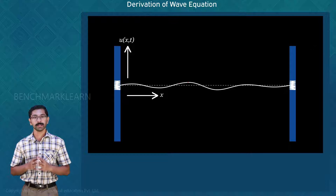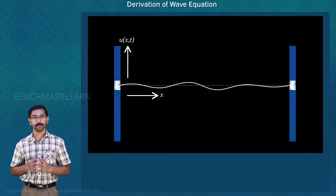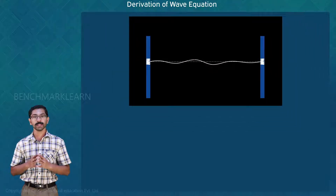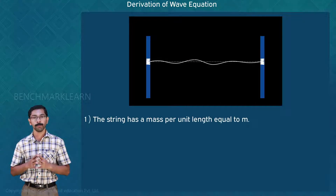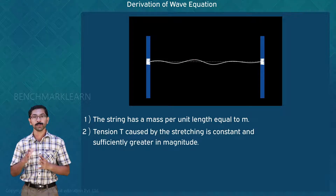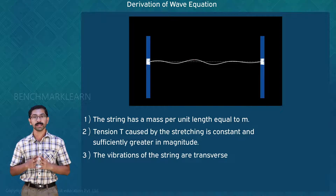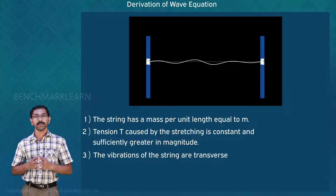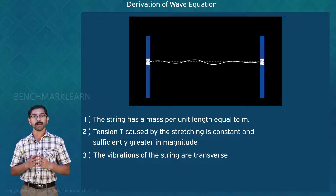The derivation of the wave equation has been asked in some K2 exams, so we discuss each step in detail. We have a vibrating string of length L and a displacement function given by u(x, t). Assume that: first, the string has a mass per unit length equal to m; second, tension T caused by the stretching is constant and sufficiently greater in magnitude; third, the vibrations of the string are transverse. Considering these assumptions, we will check the effect of the force during the vibration and derive the wave equation.